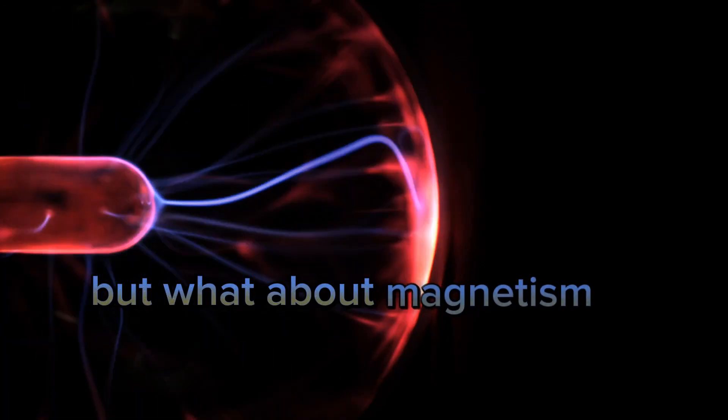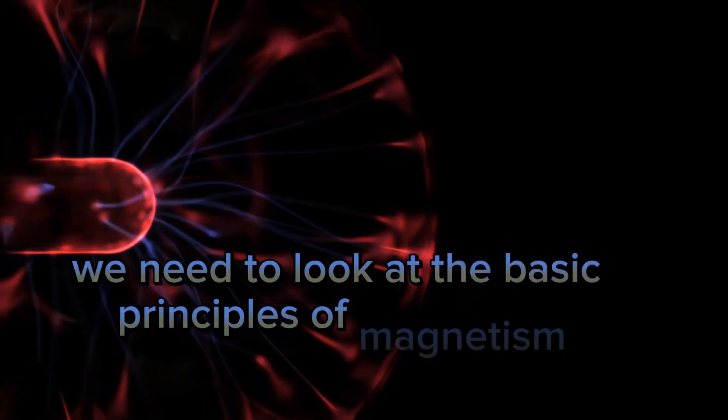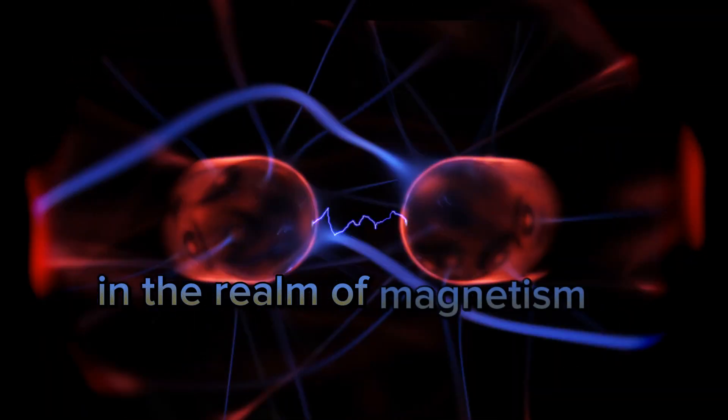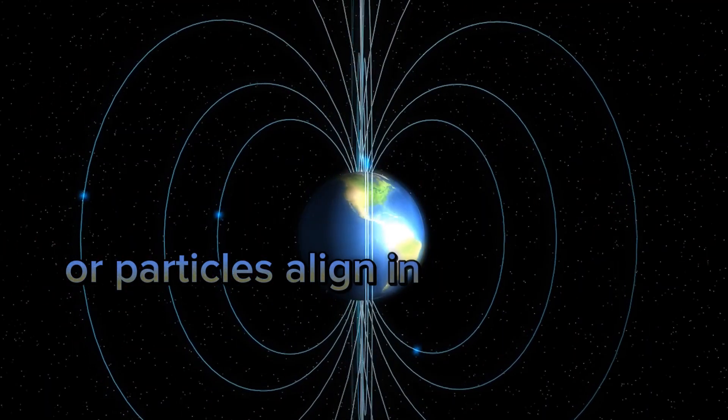But what about magnetism? To understand this, we need to look at the basic principles of magnetism and how they might relate to black holes. In the realm of magnetism, objects become magnetic when their atoms or particles align in a specific way.